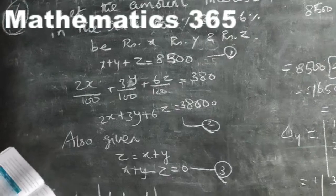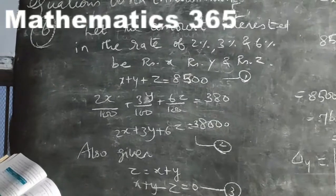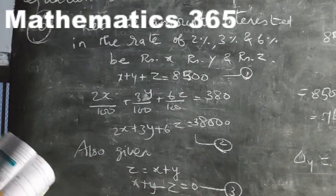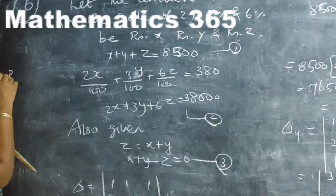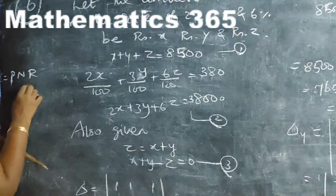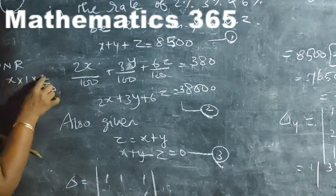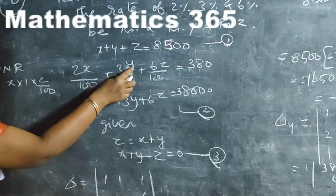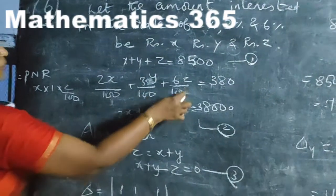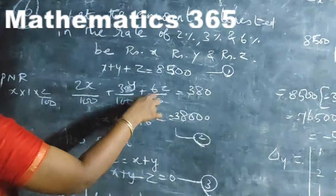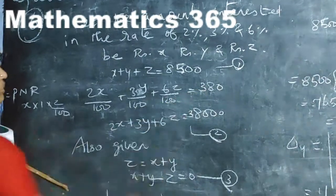The second equation involves interest rates: x at 2%, y at 3%, z at 6%. The total simple interest for 1 year is 380. Using I = PNR: 2x/100 plus 3y/100 plus 6z/100 equal to 380. Taking LCM as 100, we get 2x plus 3y plus 6z equal to 38,000. This is the second equation.